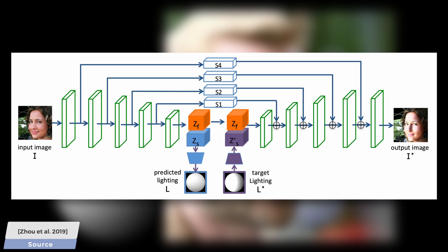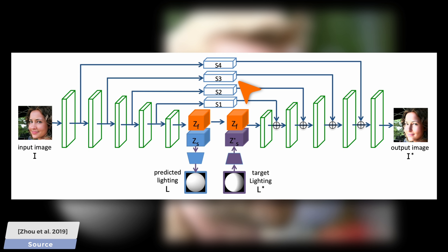It is shaped a bit like an hourglass, and contains encoder and decoder parts. The encoder part takes an image as an input and estimates what lighting could have been used to produce it, while the decoder part is where we can play around with changing the lighting, and it will generate the appropriate image that this kind of lighting would produce. What you see here are skip connections that are useful to save insights from different abstraction levels and transfer them from the encoder to the decoder network.